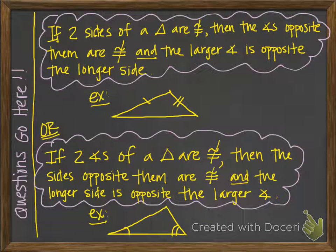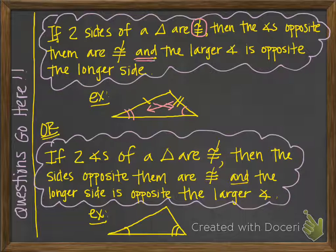The next two theorems are also very similar. The top one says if two sides of a triangle are not congruent — you can see that from the picture because there's a different number of tick marks — then the angles opposite them are not congruent. The larger angle is opposite the longer side, so the smaller angle is opposite the shorter side. These theorems can deal with any type of triangle, not just isosceles.